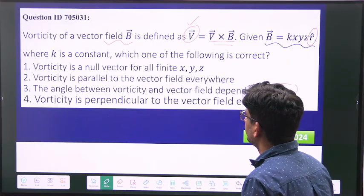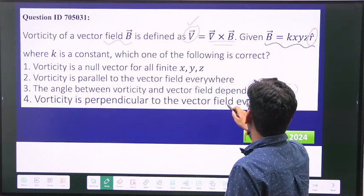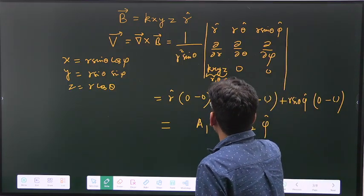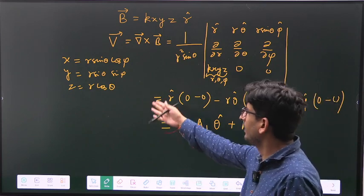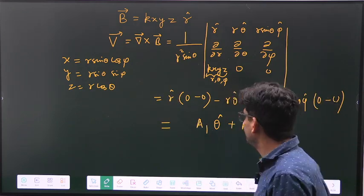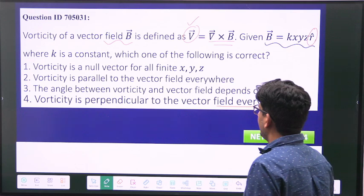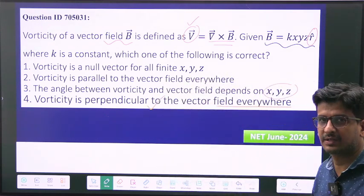So this theta cap and phi cap will be perpendicular to R. So if I check the option, this vector V will be perpendicular to the vector field everywhere, because R cap is always... So whatever are the values of A1 and A2, which will depend on R, theta, and phi, this will be always perpendicular to the R cap. So in this case, option 4 is the correct option. Thank you so much.